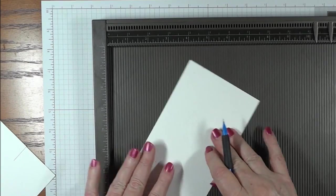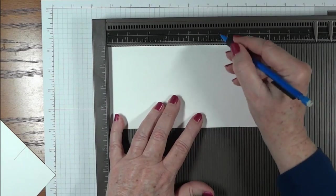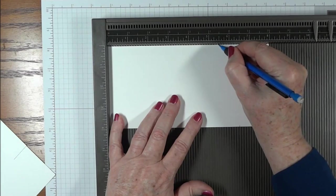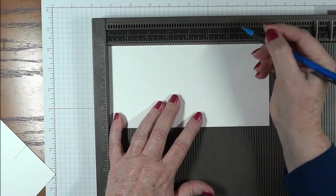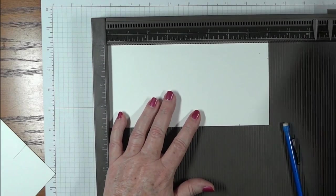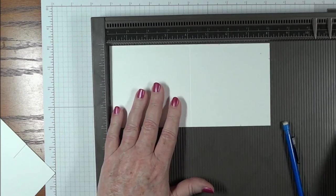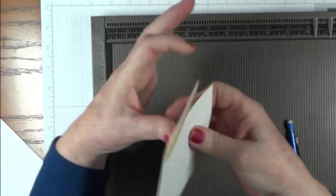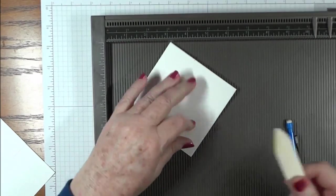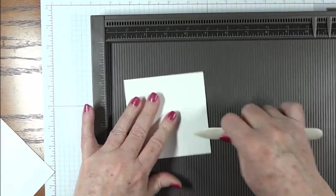Now we're going to turn it clockwise again, and this time we're going to mark it at 5 1/2 inches, right here. And then we're going to score it at 4 inches. Fold it away from you, get your bone folder, and crease the scoring line.